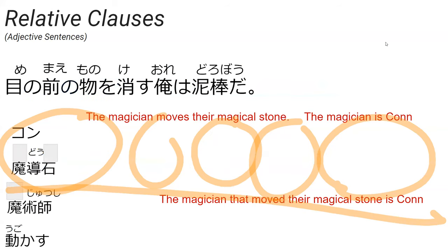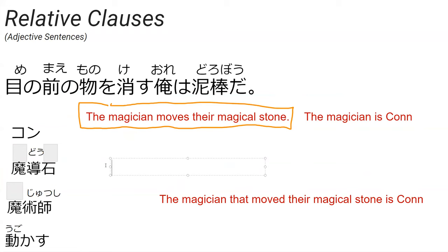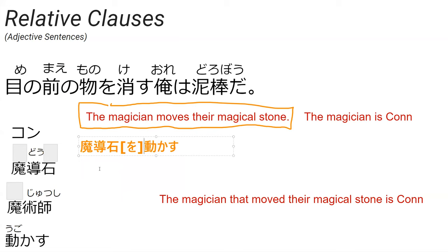So the sentence we made was: 目の前のものを消す俺はどろぼうだ — 'The I who disappears things before your eyes is a thief.' Now, make your own sentence: 'The magician moves their magical stone.' Magical stone is 魔道石, moves is 動かす. So: 魔道石を動かす魔術師. Nice — that's a beautiful relative clause.